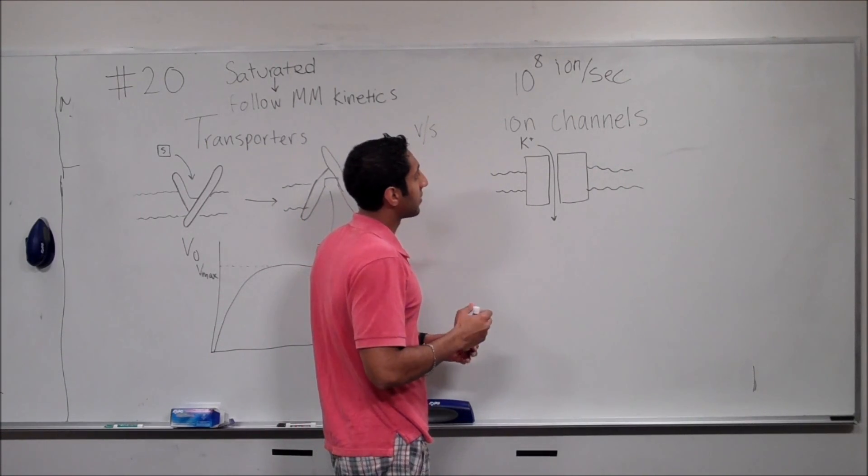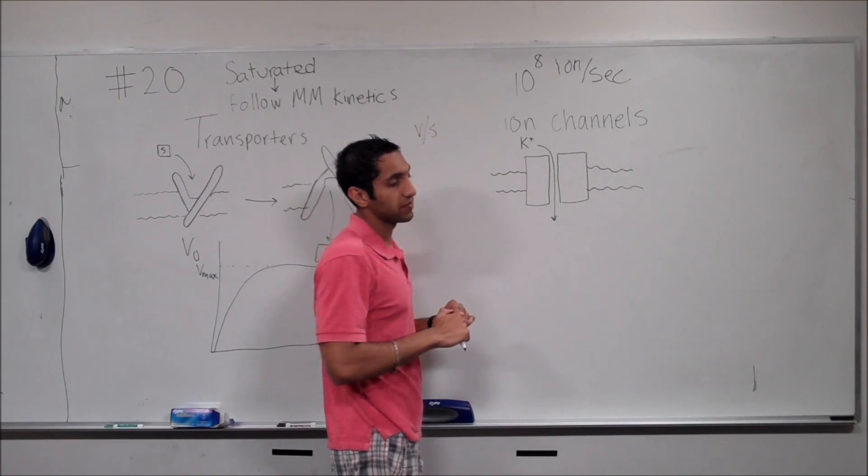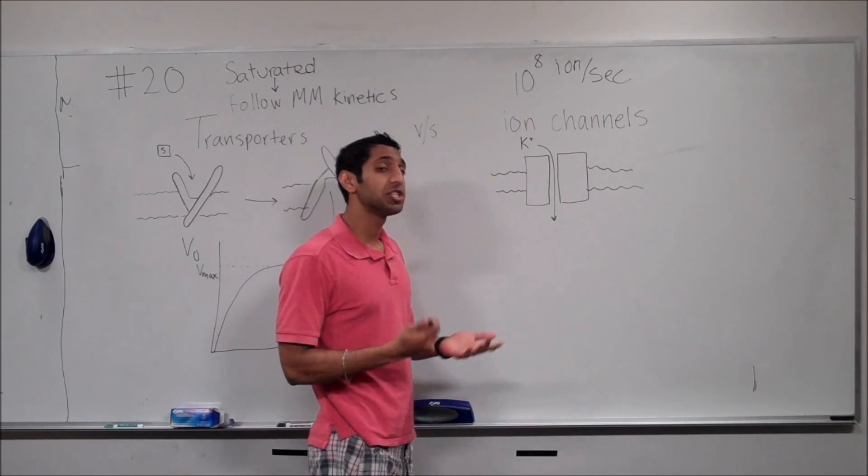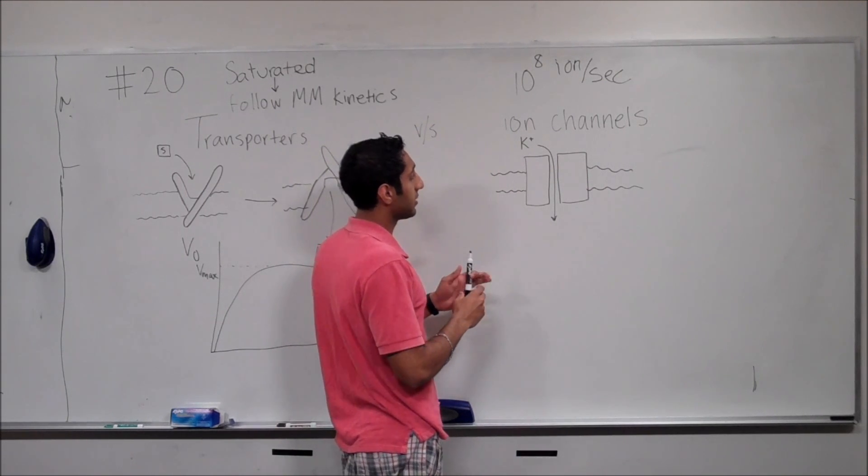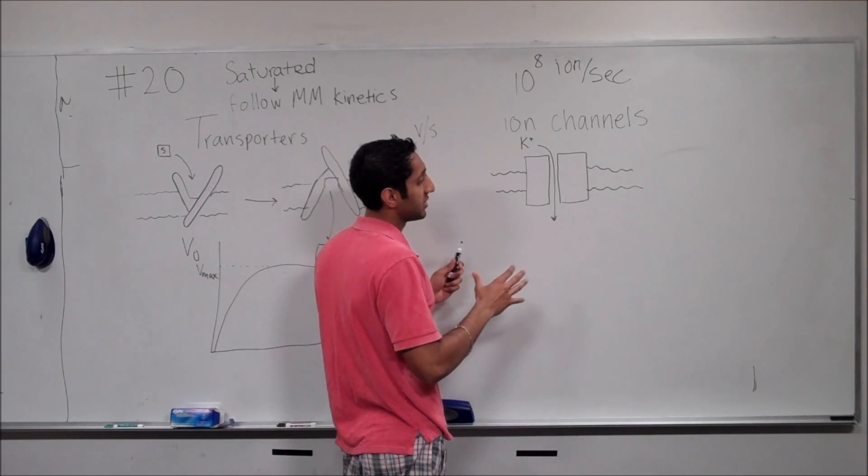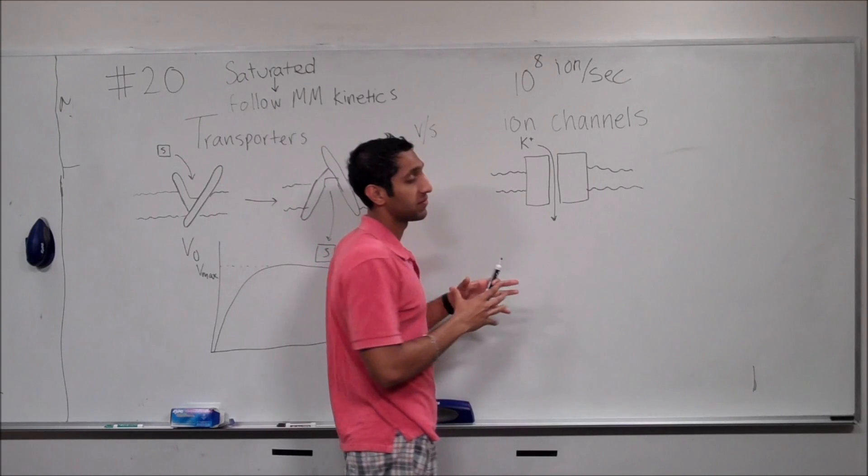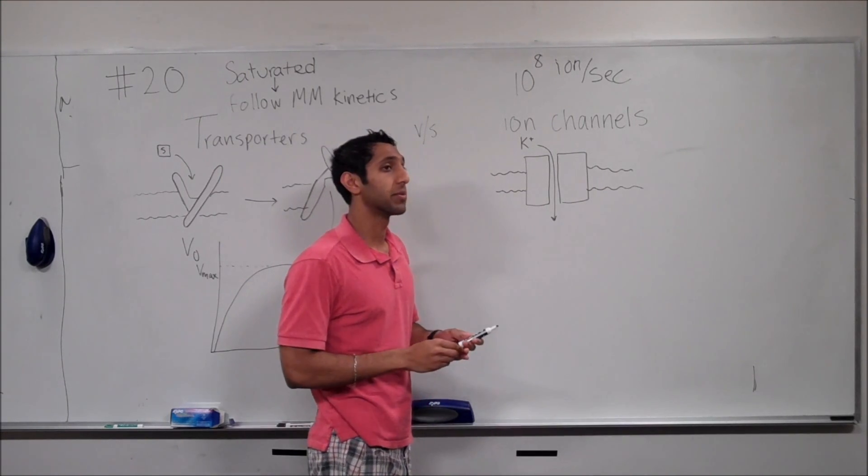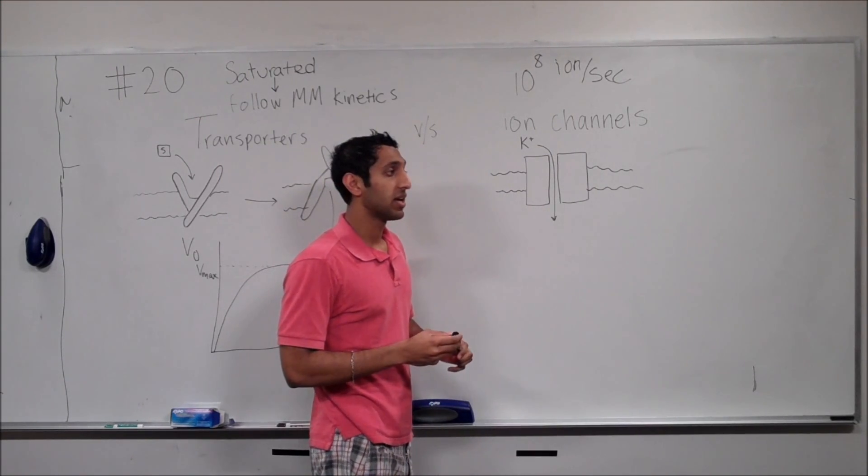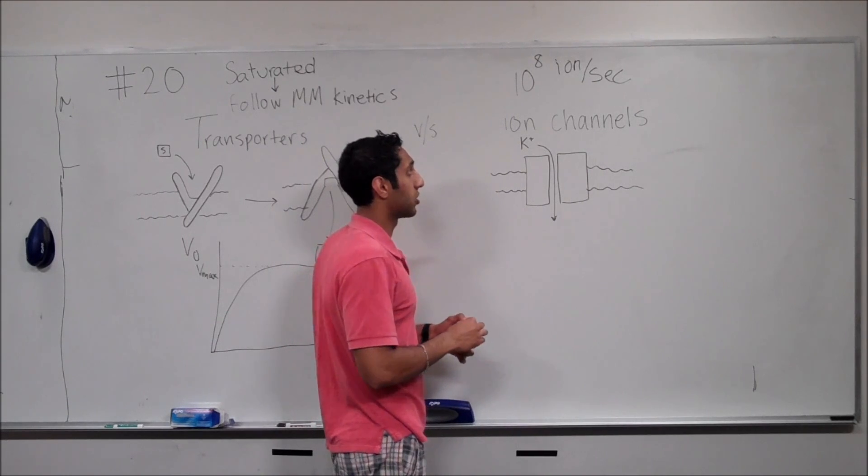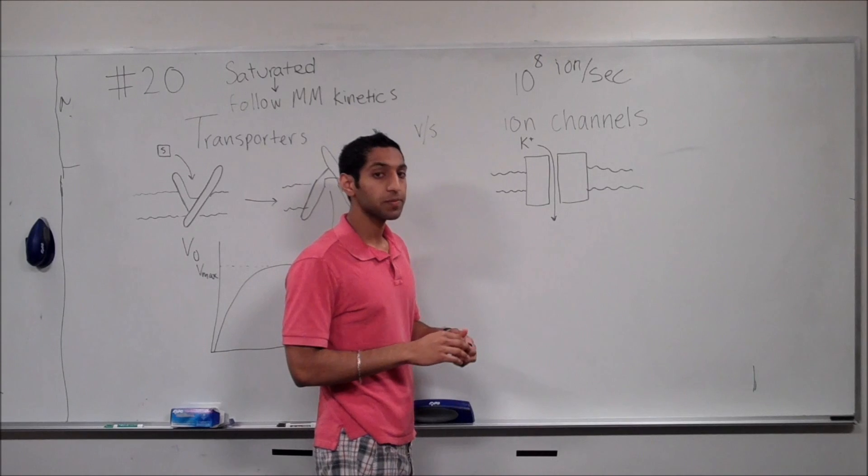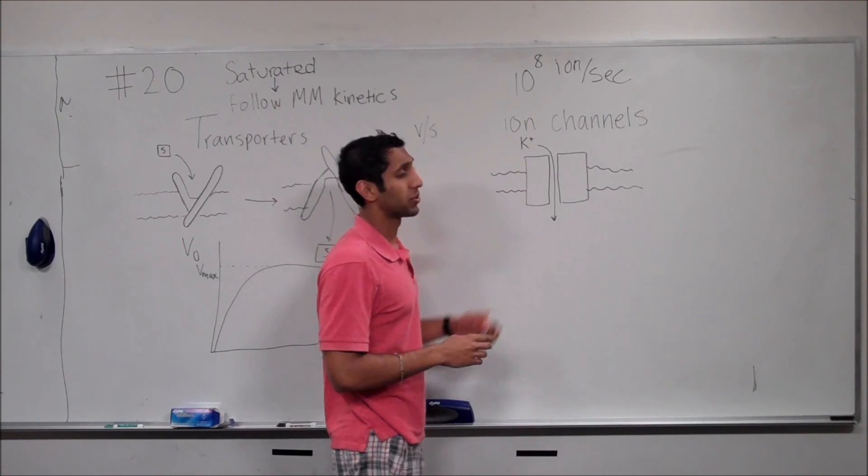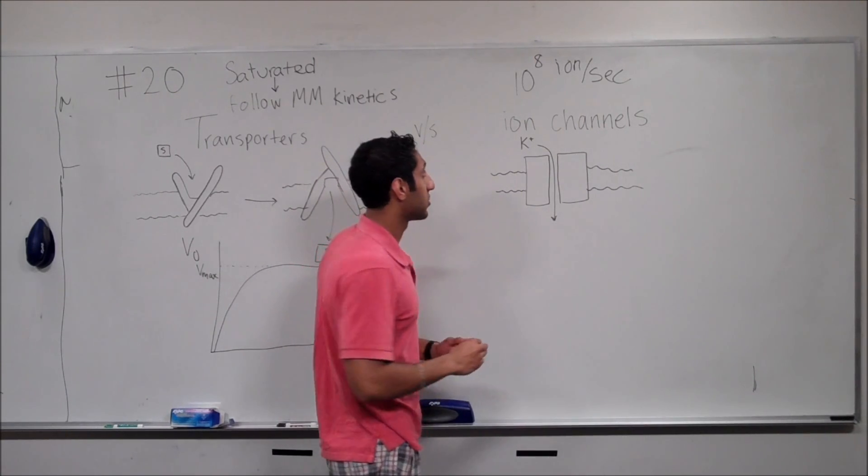And on top of that, ion channels do have self-check mechanisms in which you can have a voltage-gated channel. And in voltage-gated channels, the check in mind is controlling the amount of voltage that is across the plasma membrane. And so, that way, you can still have a check or have some level of control on how many ions pass through without having to approach Vmax still.